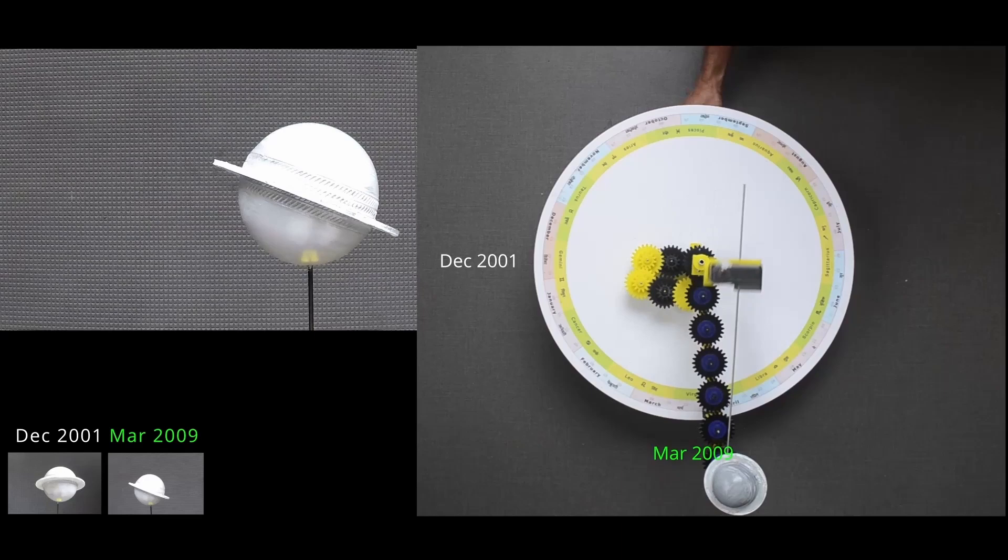These rings literally seem to disappear for some time when seen from Earth. About every 15 years, the rings are nearly invisible from Earth, because we are viewing them edge on, and they are so thin that they seem to vanish.